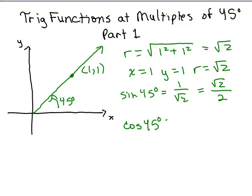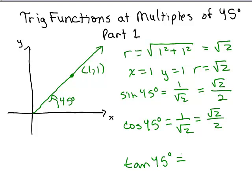Cosine of 45 degrees: you take X over R — you get the same thing, 1 over square root of 2, which is the same as square root of 2 over 2. And the tangent of 45 degrees is Y over X, so in this case it's 1 over 1, which is 1.